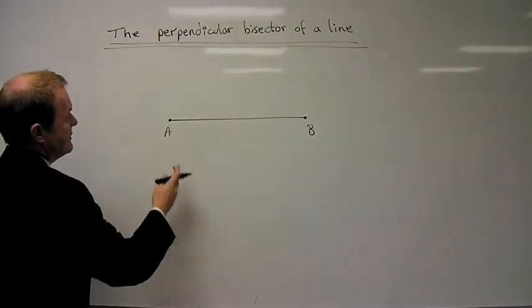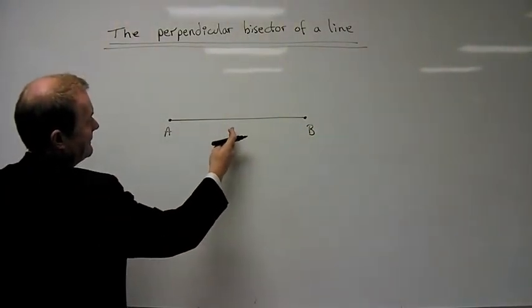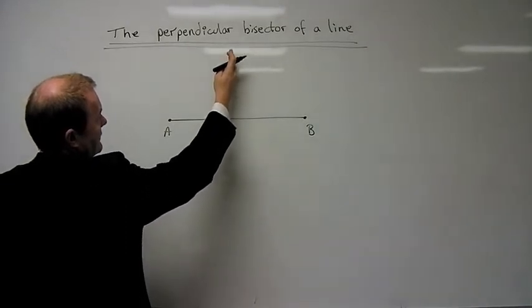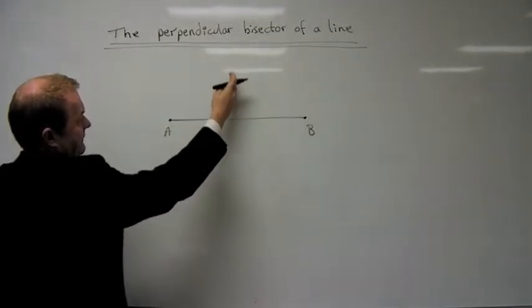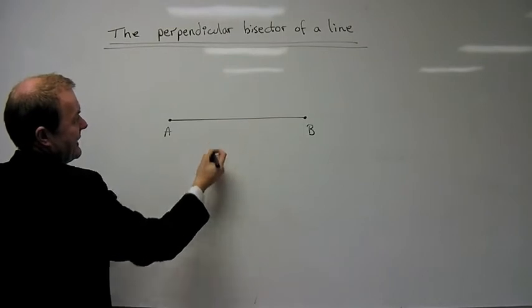And you're asked to split that line exactly in the middle and put a line going straight up and down, perpendicular at 90 degrees to it.